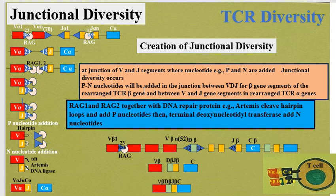P and N nucleotides are added at the junction between V, D, and J gene segments of the rearranged TCR beta gene, and between V and J gene segments in rearranged TCR alpha genes.